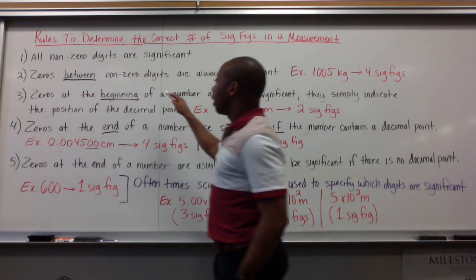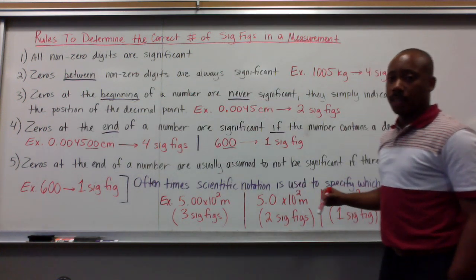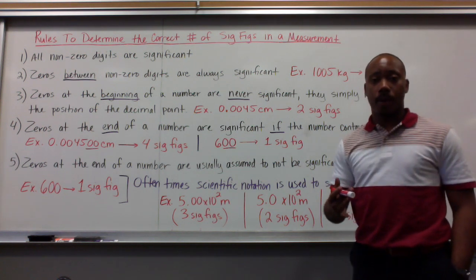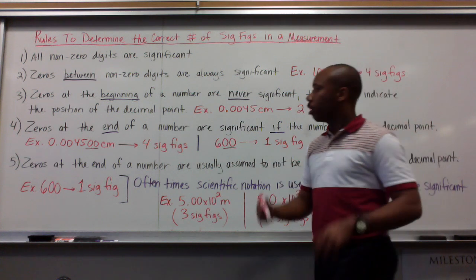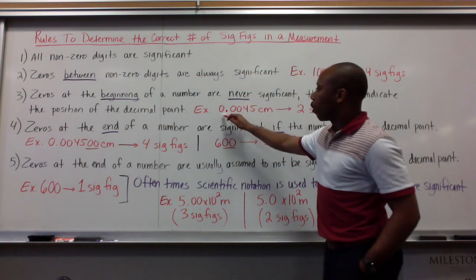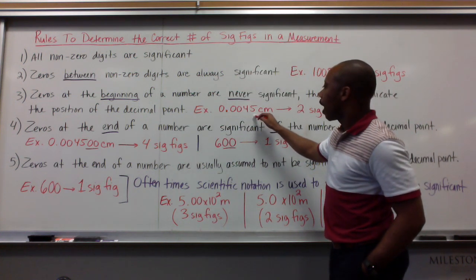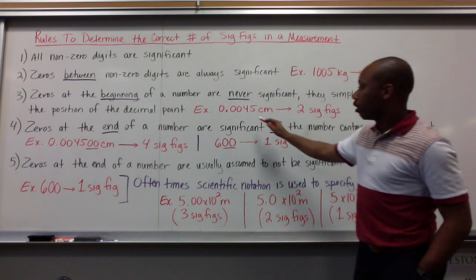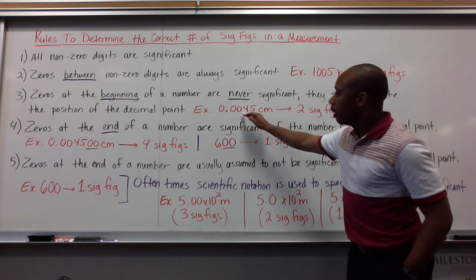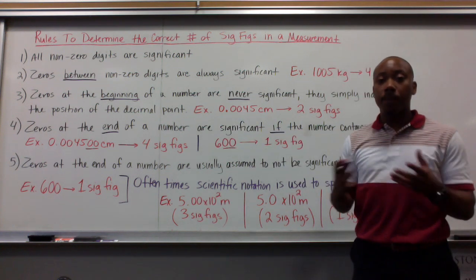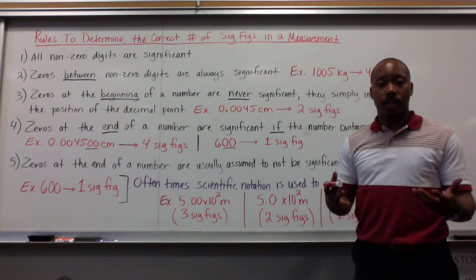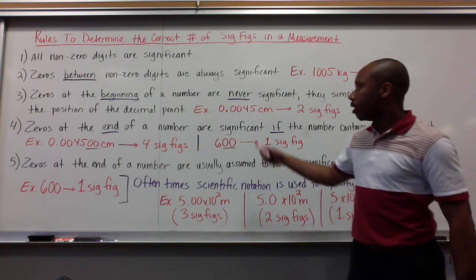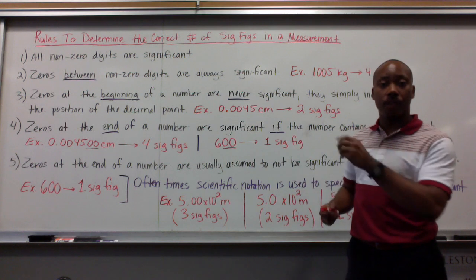Number three, zeros at the beginning of a number are never significant. They simply indicate the position of the decimal point. They're like placeholders. For example, I have 0.0045 centimeters. I only have two significant figures here, the 4 and the 5. Now, these zeros that start off my number are not significant because they're simply placeholders. They're telling me that I have a really small number. Yet, they do not indicate the precision of this value.